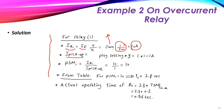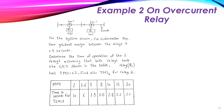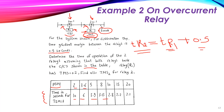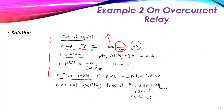The pickup current flowing inside the relay will be equal to the plug setting multiplied by the CT secondary. The plug setting is 100% and the secondary is 1 ampere, so it will be 1 times 1 ampere, giving us 1 ampere. The plug setting multiplier is equal to the actual current value of 10 amperes over the pickup current of 1 ampere.